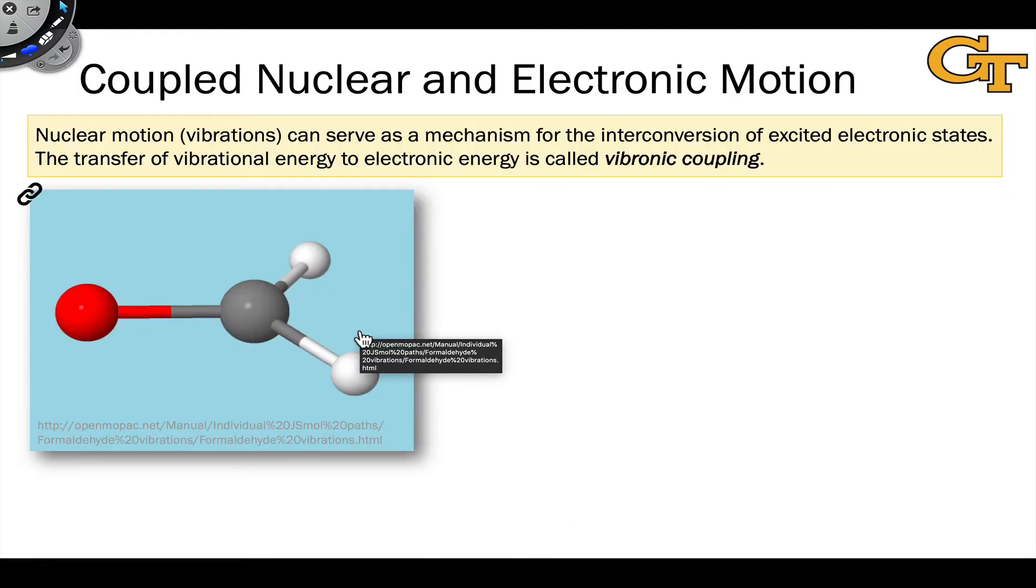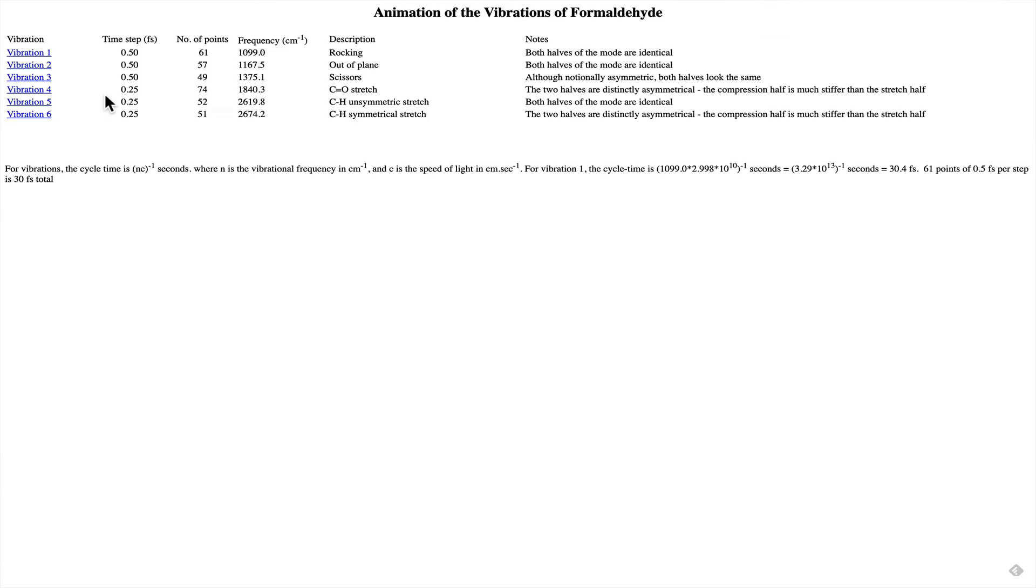So we've talked about how the N to pi-star transition is forbidden at zero order. Now let's take a look at some of the vibrations of formaldehyde—we've moved from acetone to formaldehyde, but it's the same idea—how some of these vibrations can facilitate the N to pi-star transition through a mechanism called vibronic coupling. This webpage lists a number of different vibrations of the formaldehyde molecule, and I want to start with the CO and CH stretches.